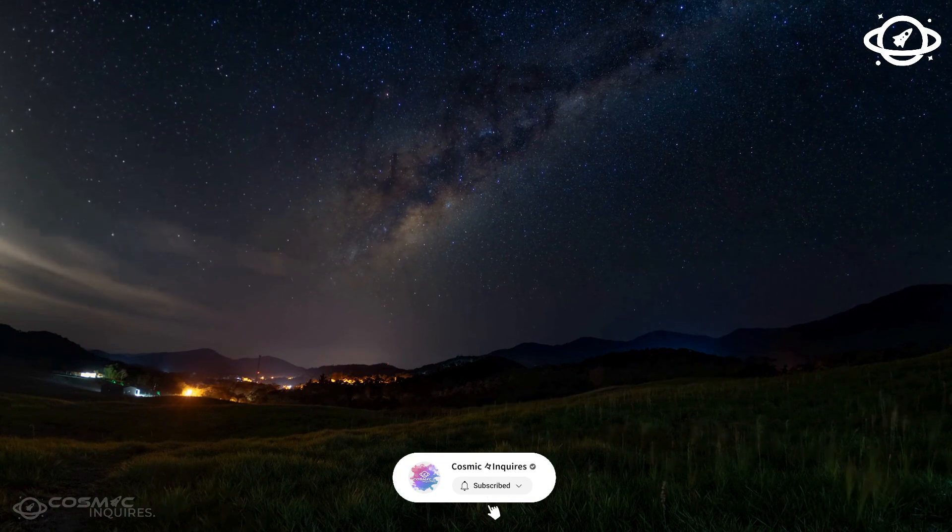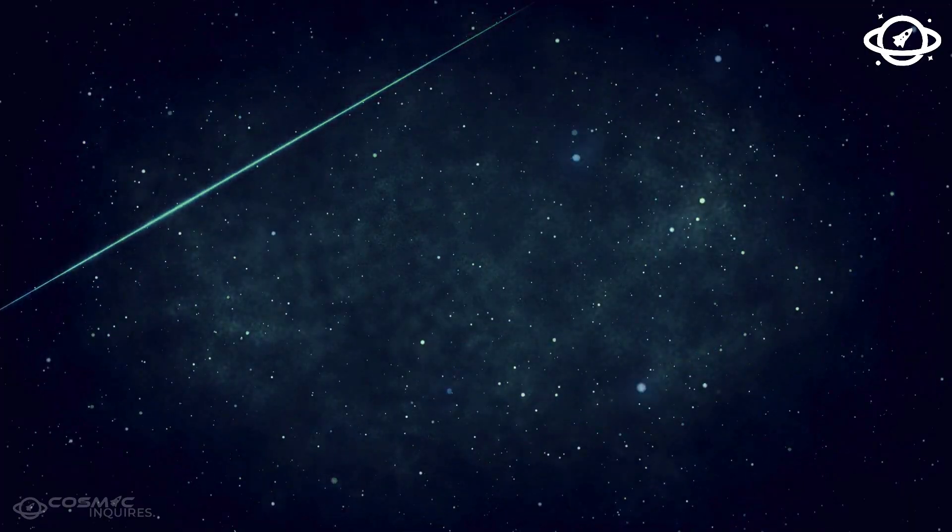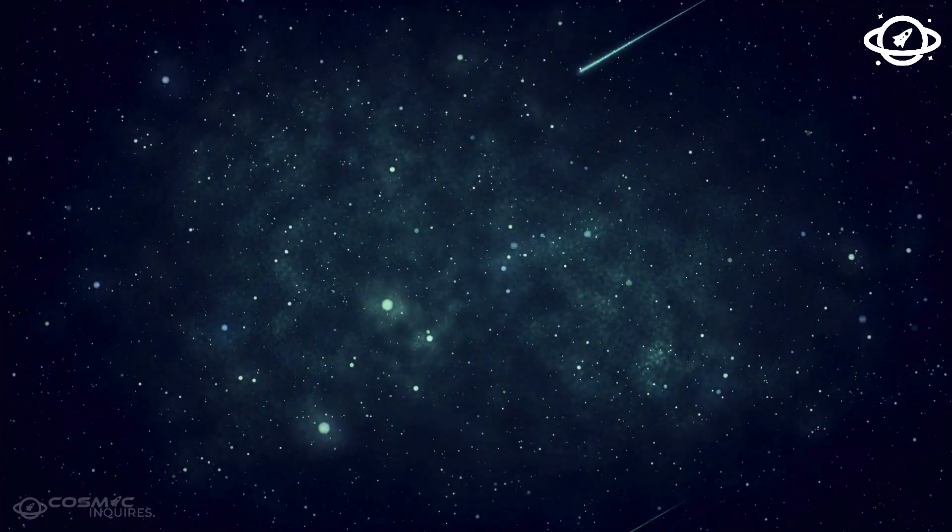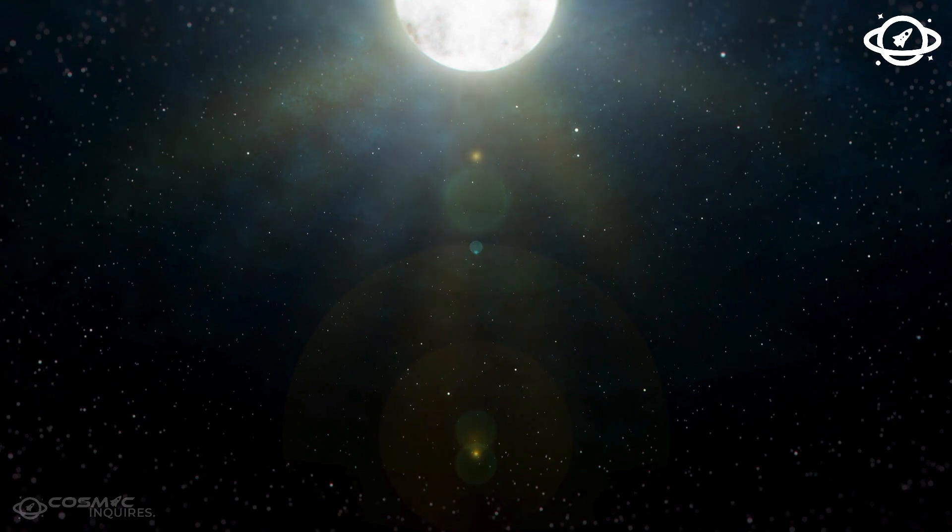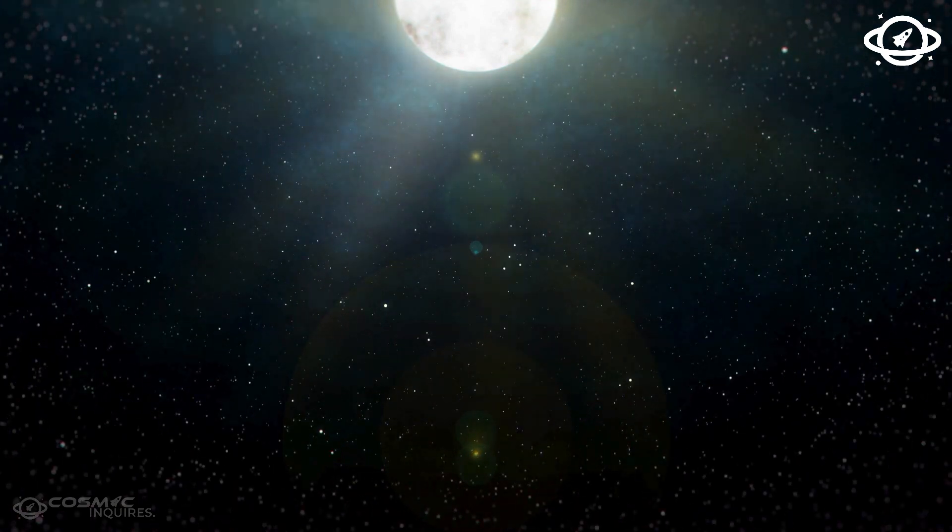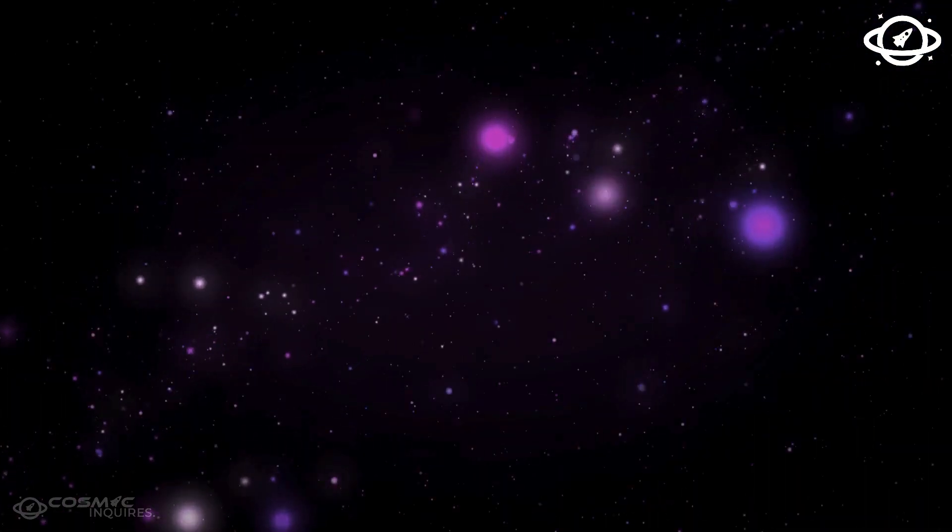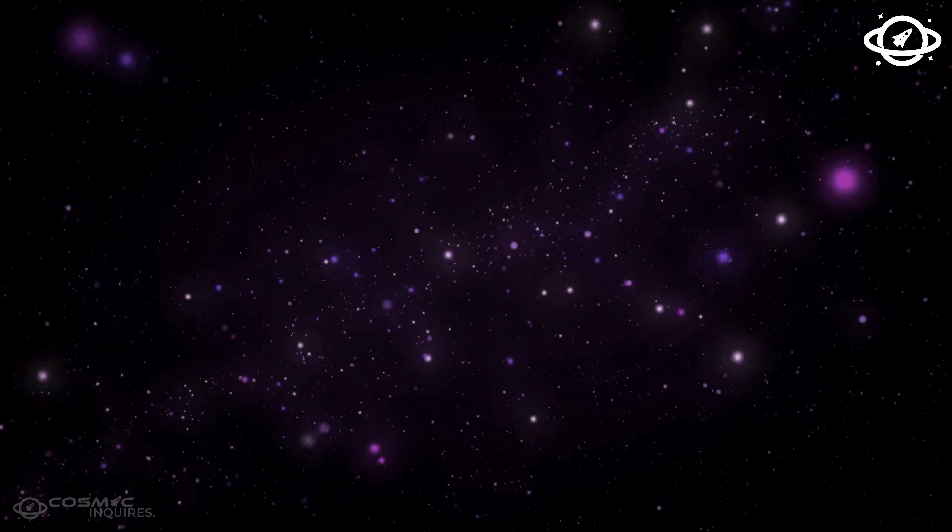Despite its larger size, Proxima b's rapid orbit around its star, Proxima Centauri, challenges our preconceptions. While its close proximity might suggest scorching temperatures, the feeble radiance of Proxima Centauri paints a different picture.